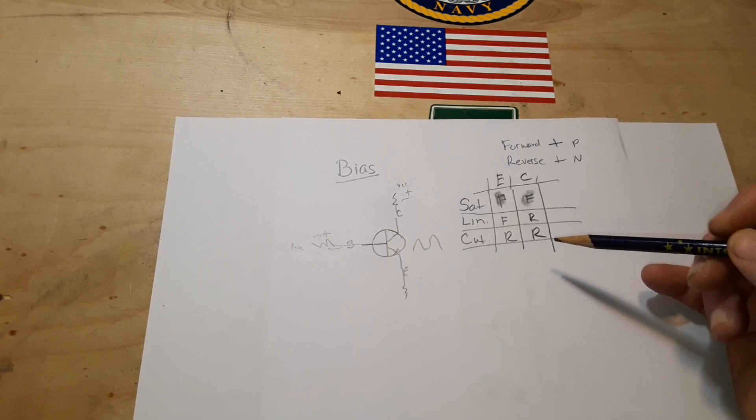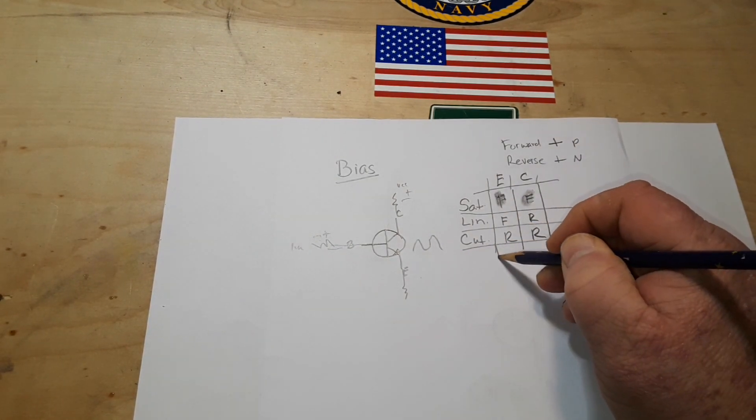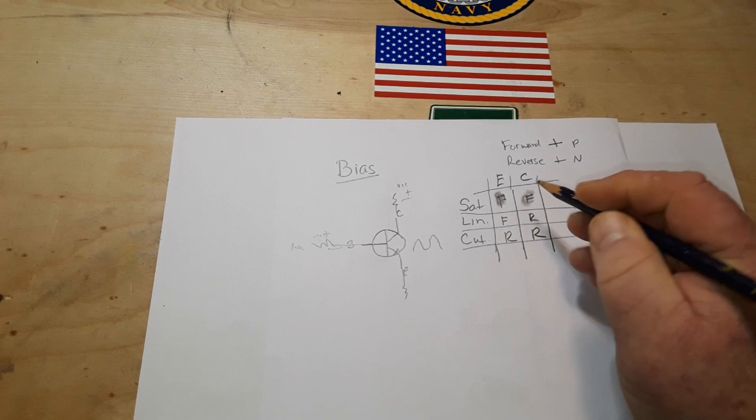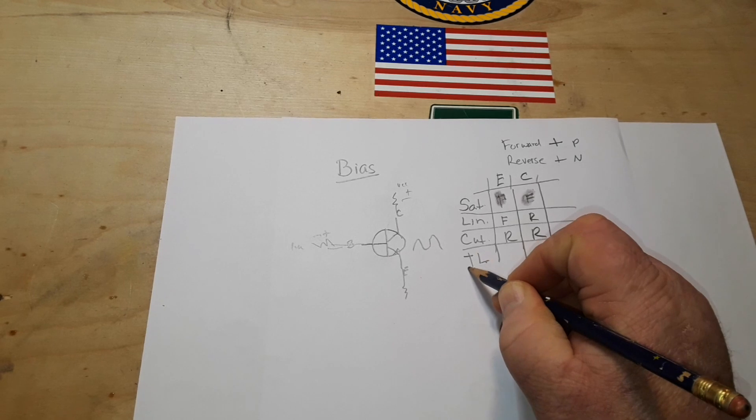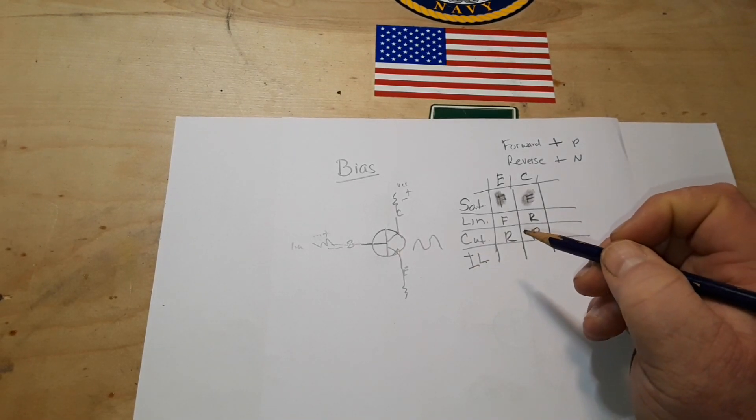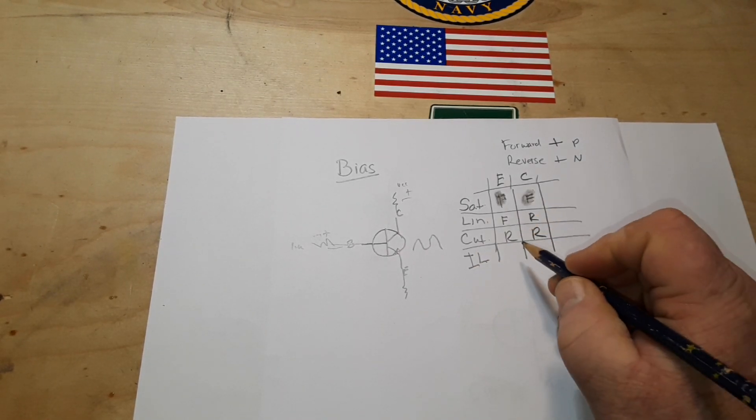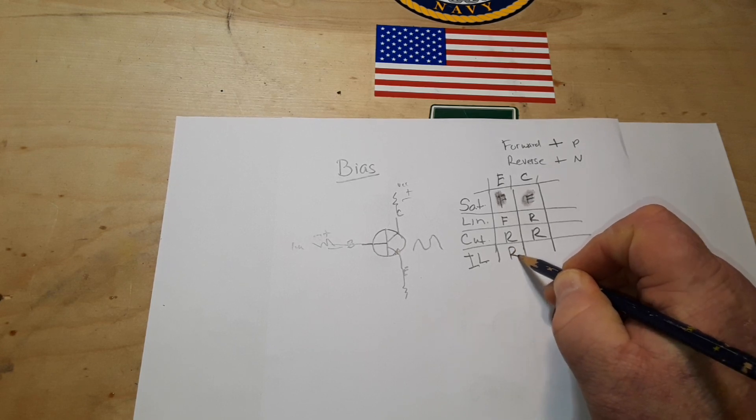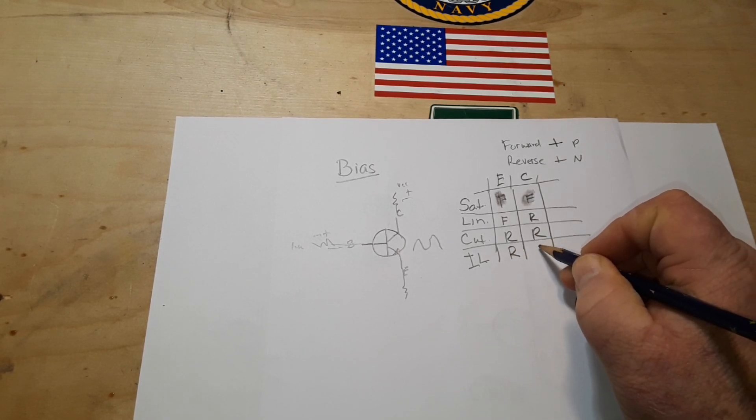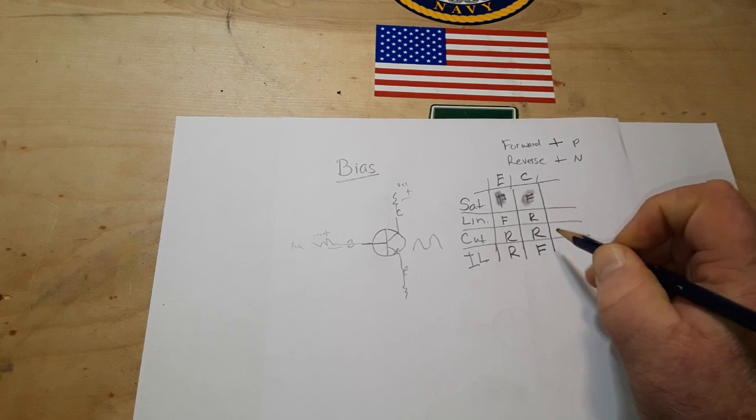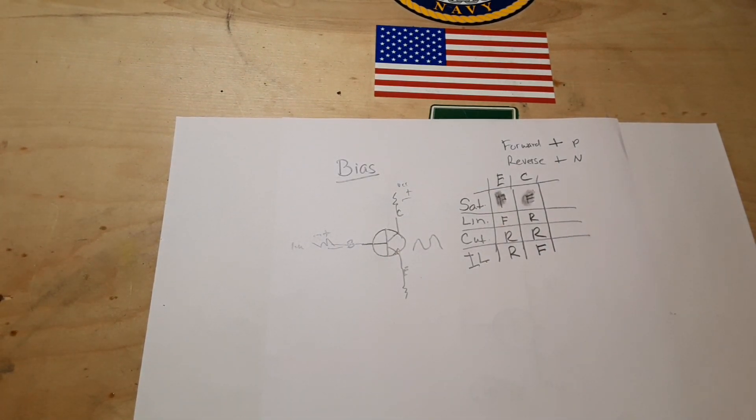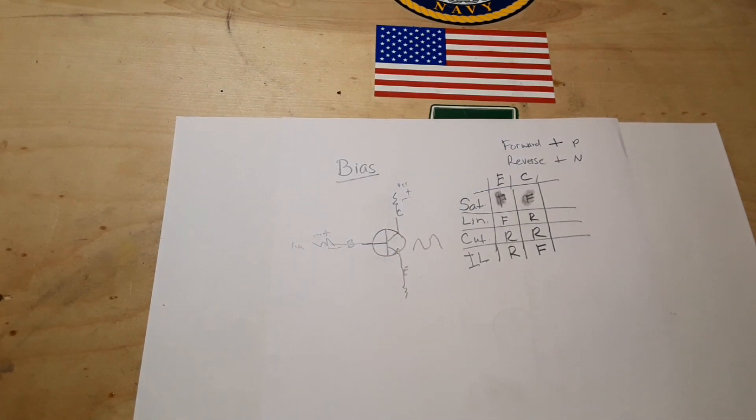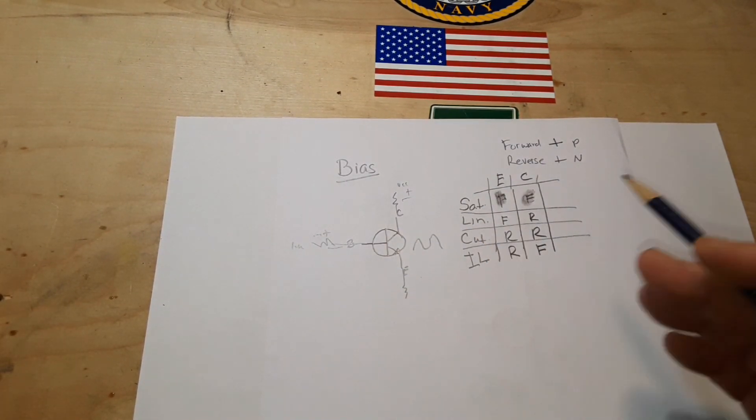Now the astute among you might be saying to yourself, but isn't there an inverse linear region? Why yes, yes there is. If you reverse bias your emitter and forward bias your collector you will end up in that region where nothing really good happens, but it is a legitimate region of the transistor.